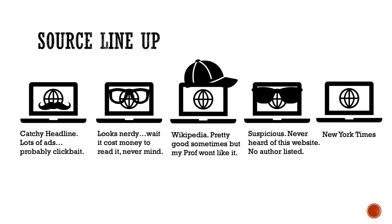You actually evaluate sources every time you do a Google search without even realizing it — when you look for things that were published recently, or you look for publications that you trust or recognize, and when you pay attention to whether or not a site has a .gov, .com, .org, or .edu extension. That's part of evaluating sources.